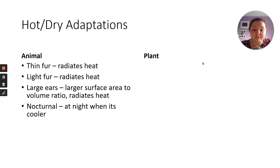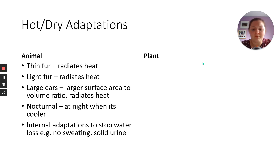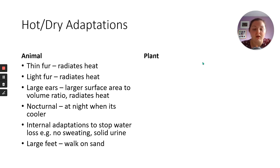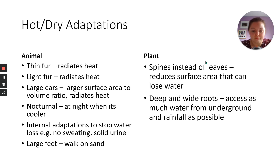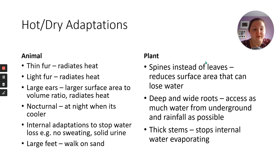Nocturnal behaviour — when it's cooler at night, they hunt and are active. Some cool adaptations to stop water loss: some animals don't sweat at all, and the desert rat produces solid urine so they don't lose any water. Plants also need to keep water: instead of leaves, they've got spines like a cactus, which reduces surface area so it loses less water. If they don't have spines, they tend to have very small leaves. They have deep and wide roots so when there is rain, they can access as much as possible or reach water deep underground. Thick stems also stop water trapped inside from evaporating.